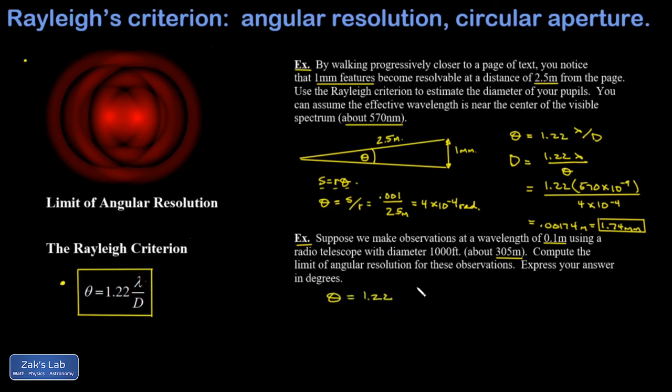We'll start by getting our minimum resolvable angle in radians. I plug in 0.1 for the wavelength, 305 for the diameter of the aperture, and this gives me a minimum resolvable angle of 4 times 10 to the negative 4 radians. That's just coincidentally the same number as the previous problem.